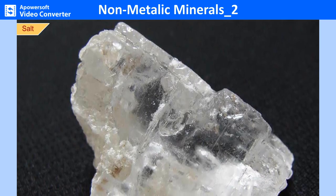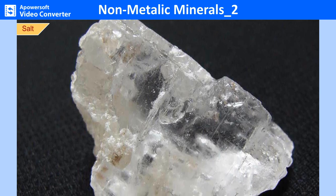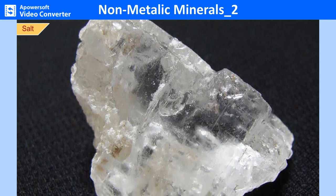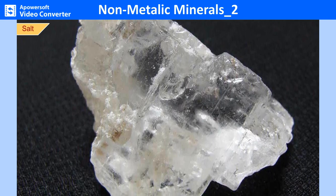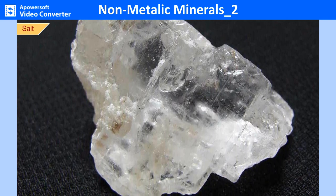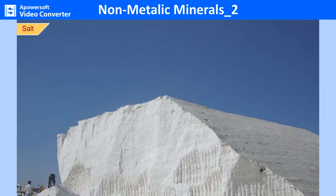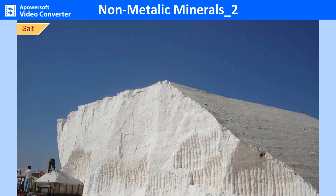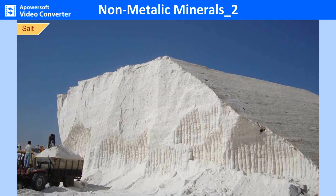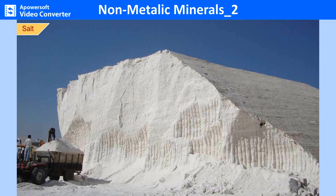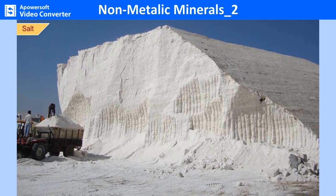Rock salt or halite occurs widely in rocks of all geologic periods. Salt is produced in most countries; however, the largest producer is the US, followed by China, Germany, India and Canada. In India, rock salt is found in Himachal Pradesh. Sea salt is obtained in Gujarat, Maharashtra, Tamil Nadu and Andhra Pradesh, while brines are found in Rajasthan.